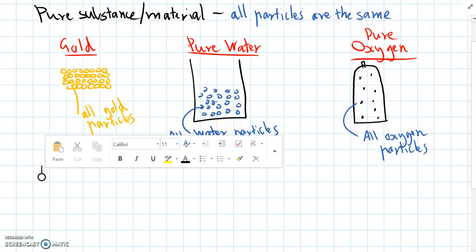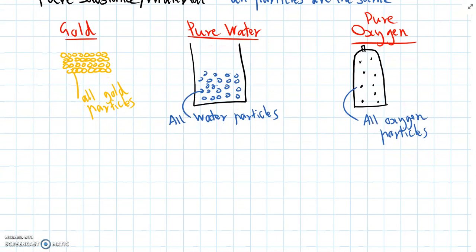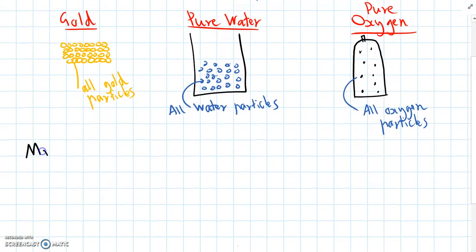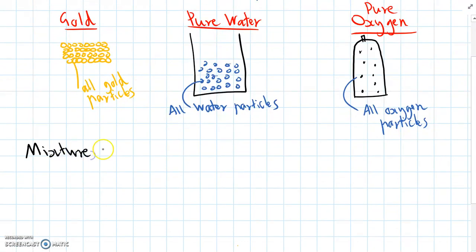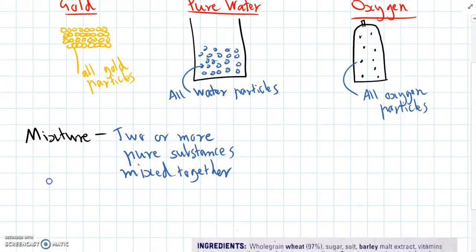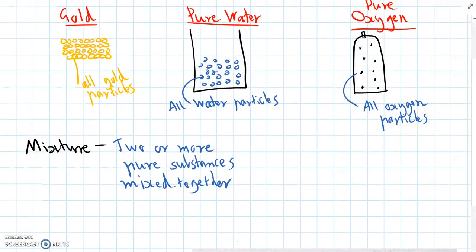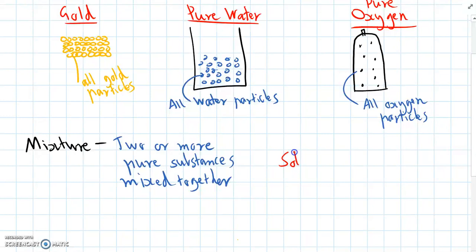So now what's the difference between a pure substance and a mixture? A mixture is when we have two or more pure substances that are combined together. We can mix together solids, liquids, or gases to make a mixture.